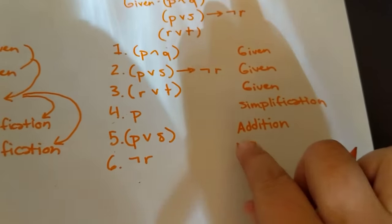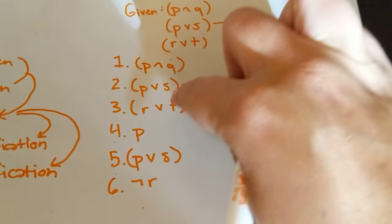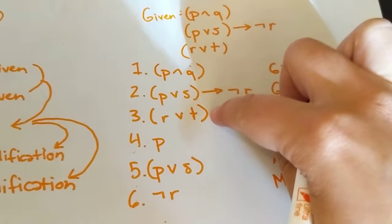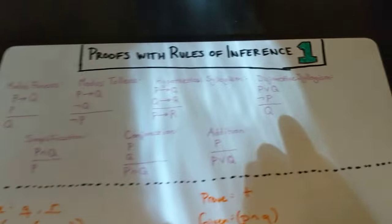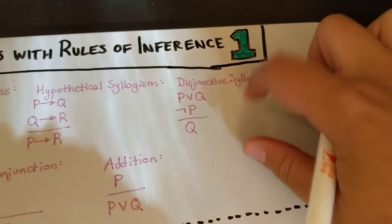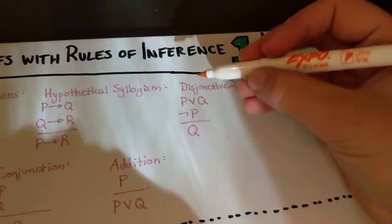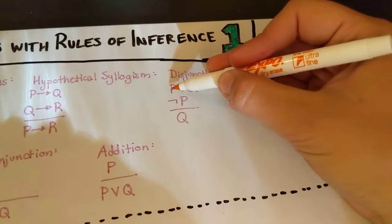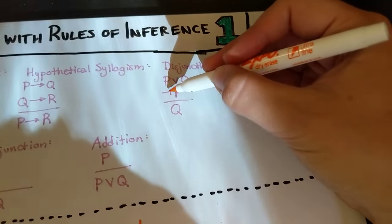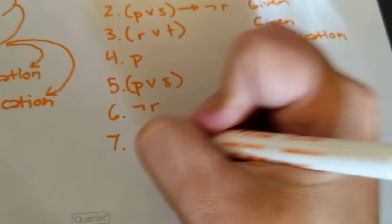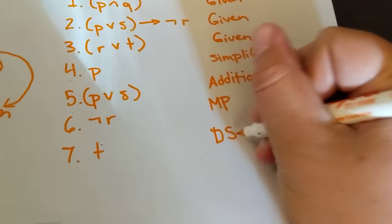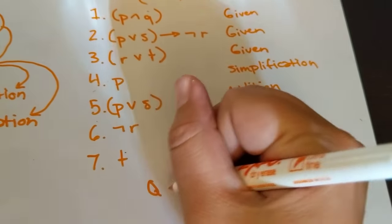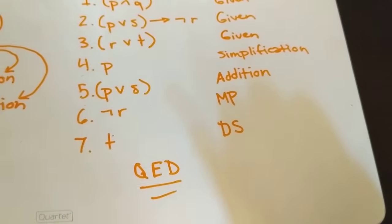All right. So what can we do once we know that not R is true? Well, we have another statement about R. So R or T is true, and as it turns out, our disjunctive syllogism works very well here. So we can say R or T is true and not R, so we can conclude T, which is our goal. So T is true, given a disjunctive syllogism, and QED, we've done it again.